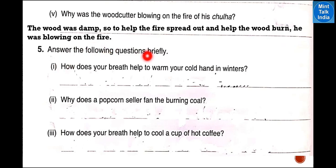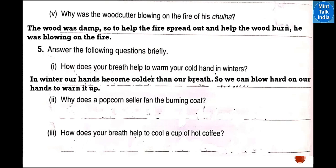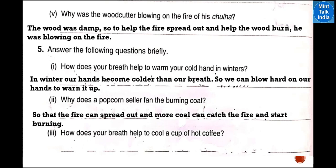Question number 5: answer the following questions. Number 1: how does your breath help to warm your cold hands in winters? In winter our hands become colder than our breath, so we can blow hard on our hands to warm them up. Number 2: why does a popcorn seller fan the burning coal? The popcorn seller fans the burning coal so that the fire can spread out, the supply of air can be increased, and more coal can catch fire and start burning.